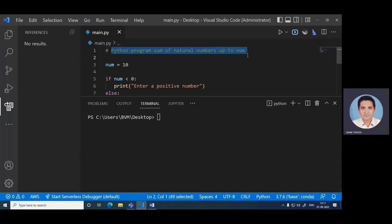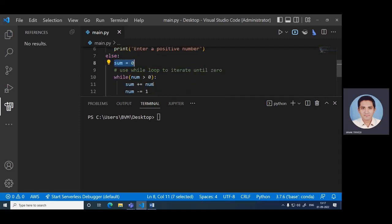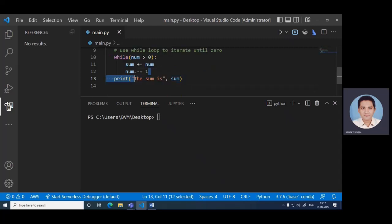Python program sum of natural numbers: number equals 10. If number is less than 0, print 'enter a positive number', else sum equals 0. Then use while loop to iterate. While number is greater than 0, sum plus equals number. Each time, we add the number to the sum and number is decreased by 1. Finally, print the sum.